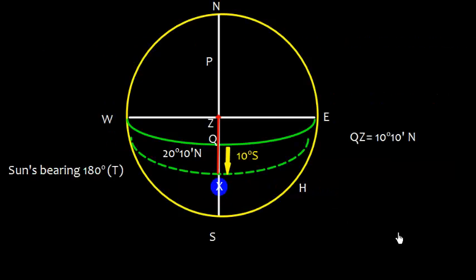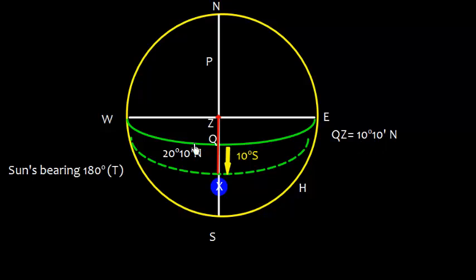Representing Example 2 on the rational horizon diagram: Q to Z is the latitude, the declination of the sun is 10° South, and the meridian zenith distance from X to Z is 20°10' North. We subtract: 20°10' minus 10° South gives us the observer's latitude of 10°10' North.